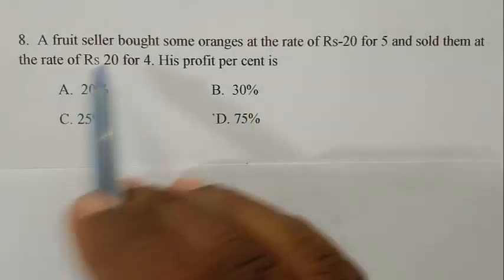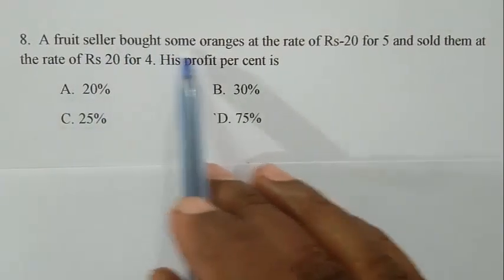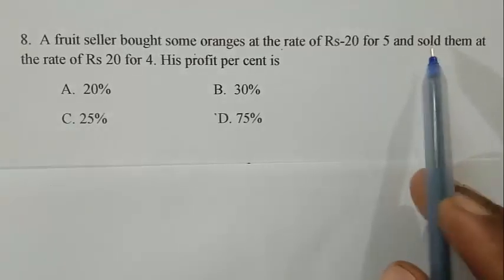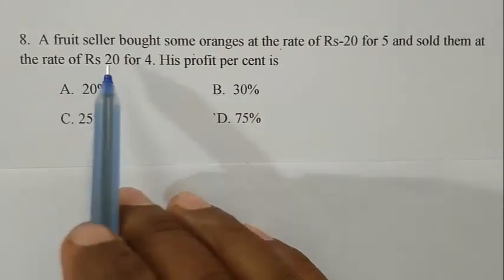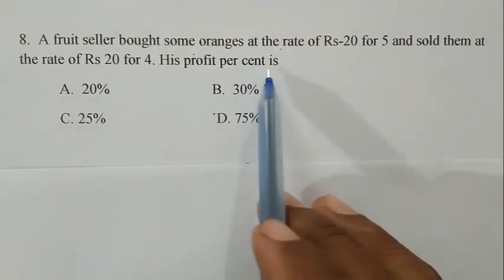Question number 8: A fruit seller bought some oranges at the rate of Rs. 20 for 5 and sold them at the rate of Rs. 20 for 4. His profit percentage is?